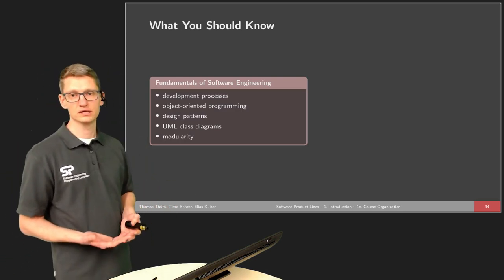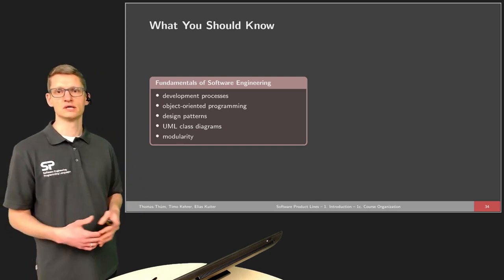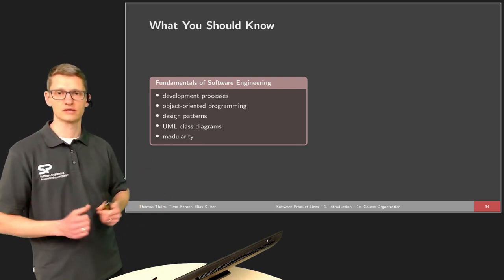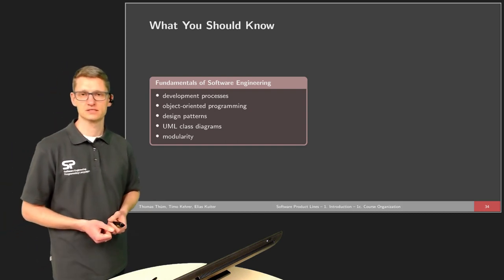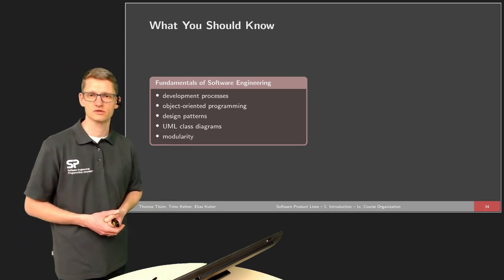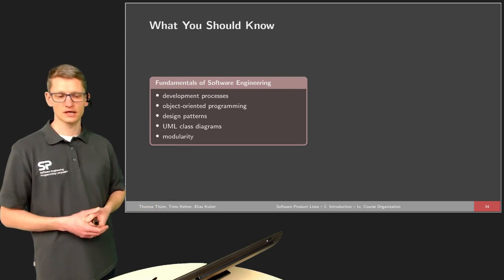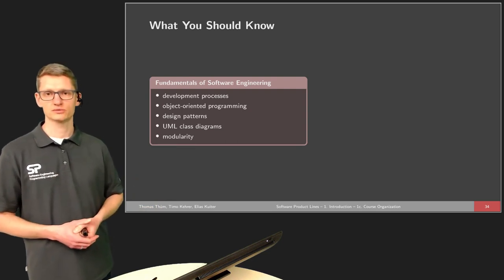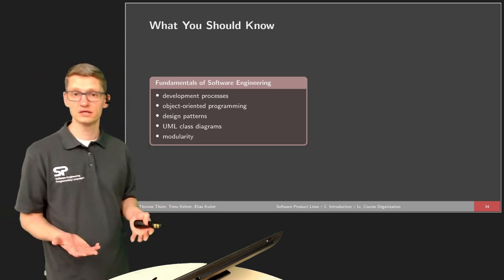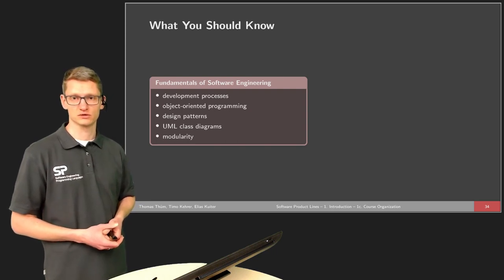What you should know already are fundamentals of software engineering. Of course, we will not start introducing the standard development processes. Already in the last videos, I've used terms like waterfall model, V model, scrum, and something like this. You will already hear this in most bachelor programs on software engineering or computer science. We will also do a small recap on object-oriented programming, but it would be good if you are familiar with object-oriented concepts, if you have already some experience with object-oriented programming.